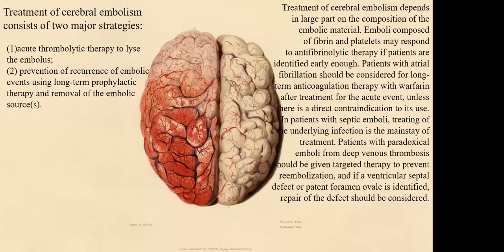Patients with atrial fibrillation should be considered for long-term anticoagulation therapy with warfarin unless there is a contraindication to its use. In patients with septic emboli, treating the underlying infection is the main treatment. Patients with paradoxical emboli from deep vein thrombosis should receive targeted therapy to prevent re-embolization, and if a ventricular septal defect or patent foramen ovale is identified, repair of the defect should be considered.